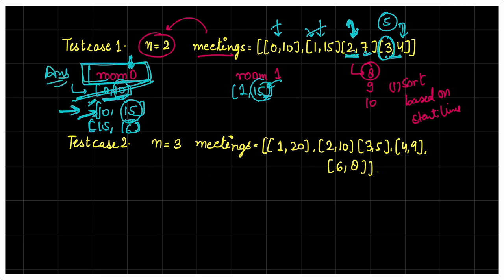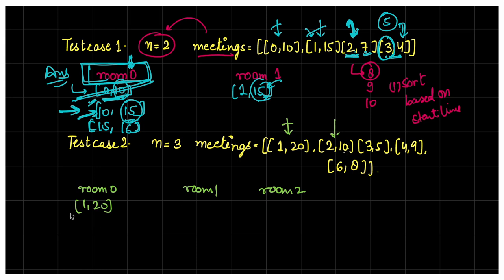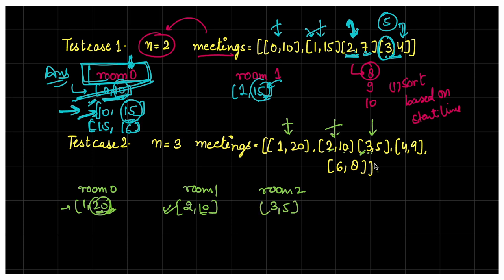Now let's go to the next test case with 3 rooms: room 0, room 1, room 2. We always start from the lowest room number. First meeting 1,20 goes into room 0. Then 2,10 arrives — can it go in room 0? No, room 0 is free only at 20, but this arrives at 2, so we give it room 1. Then 3,5 arrives — room 1 ends at 10, so it's still occupied. We check room 0 too — also occupied. So 3,5 gets room 2.